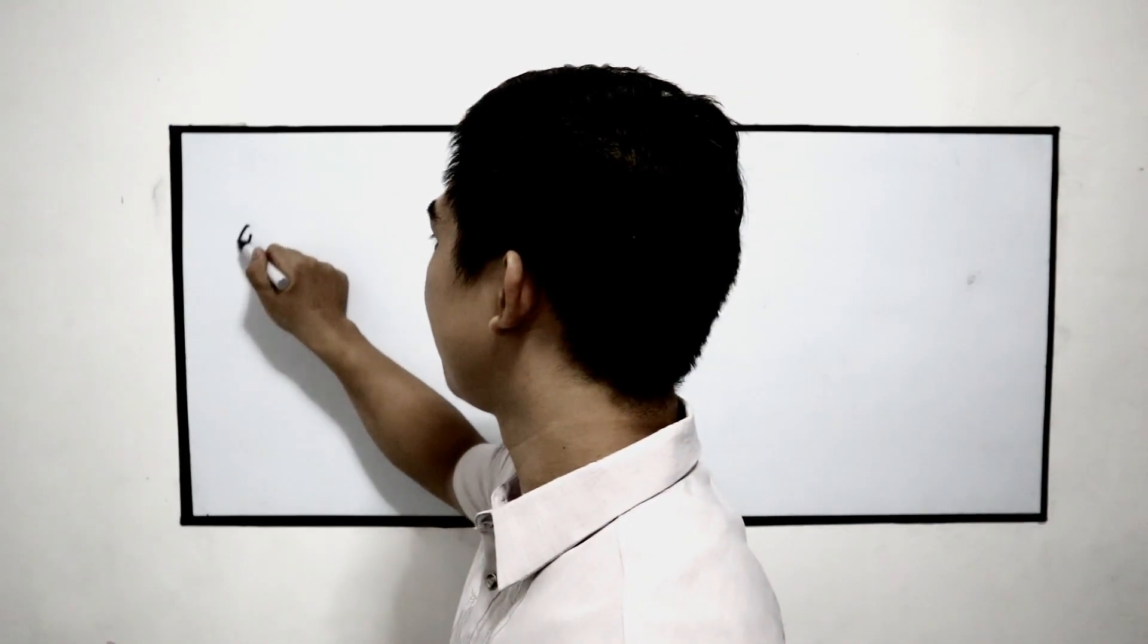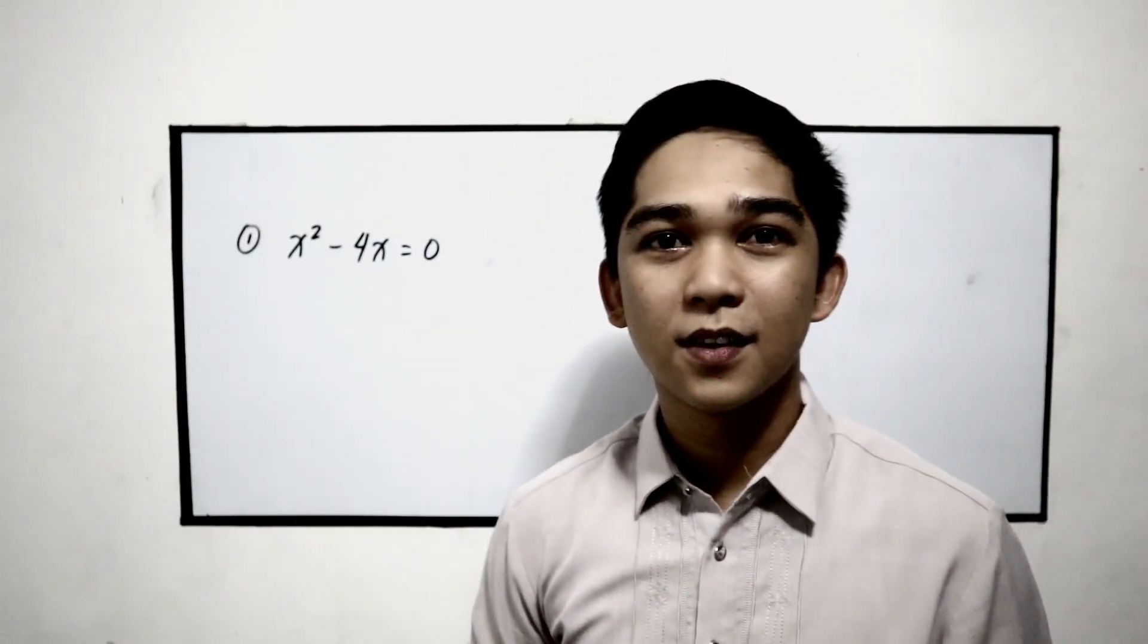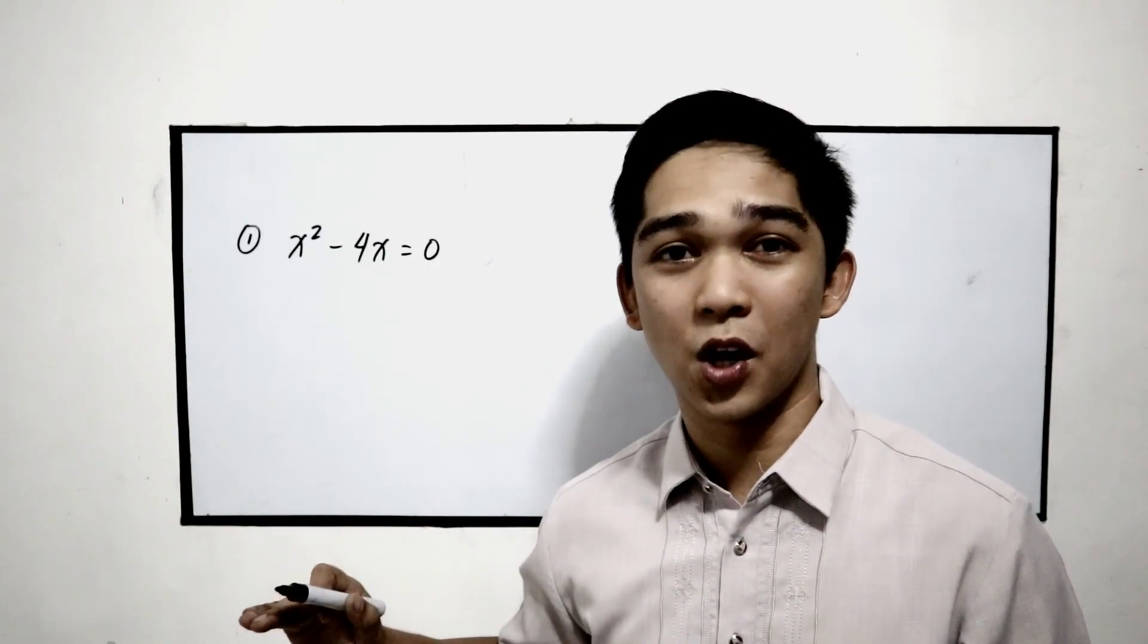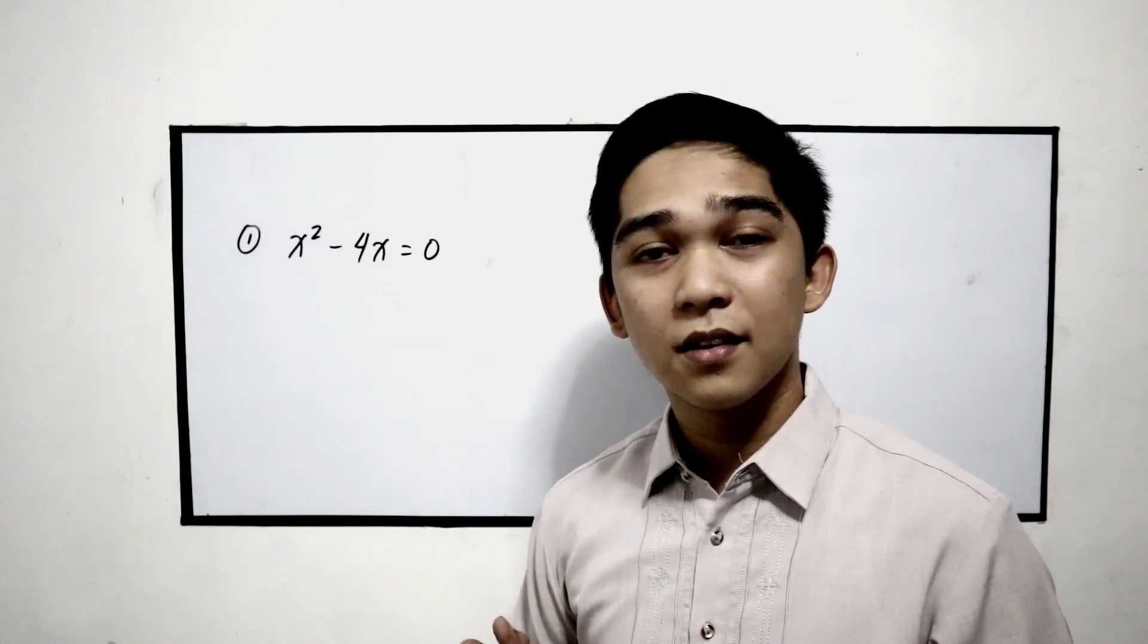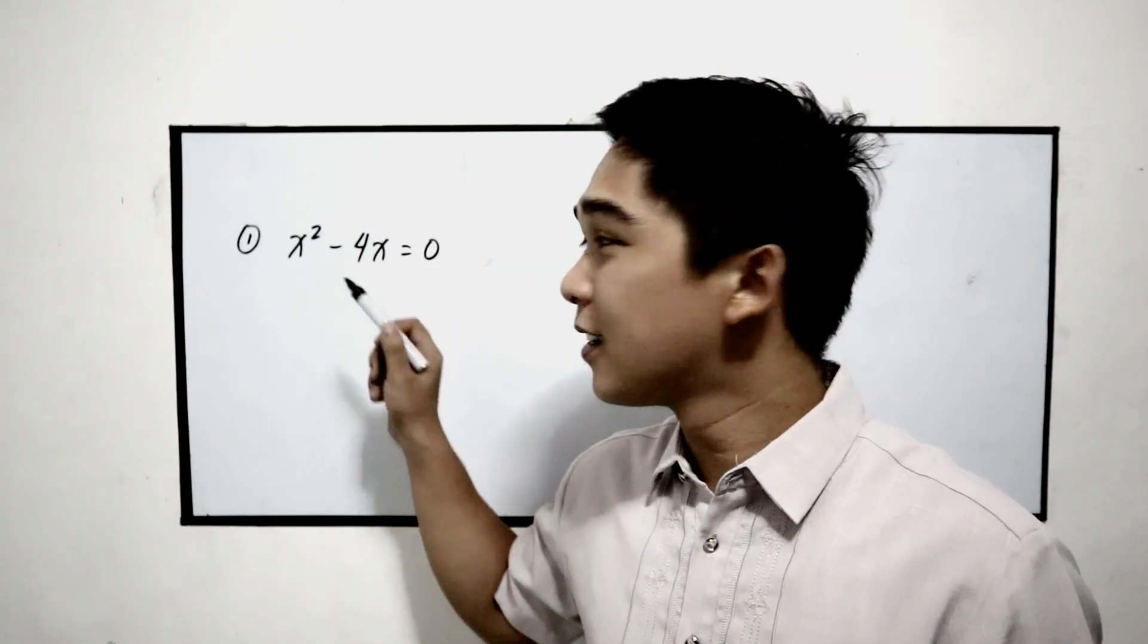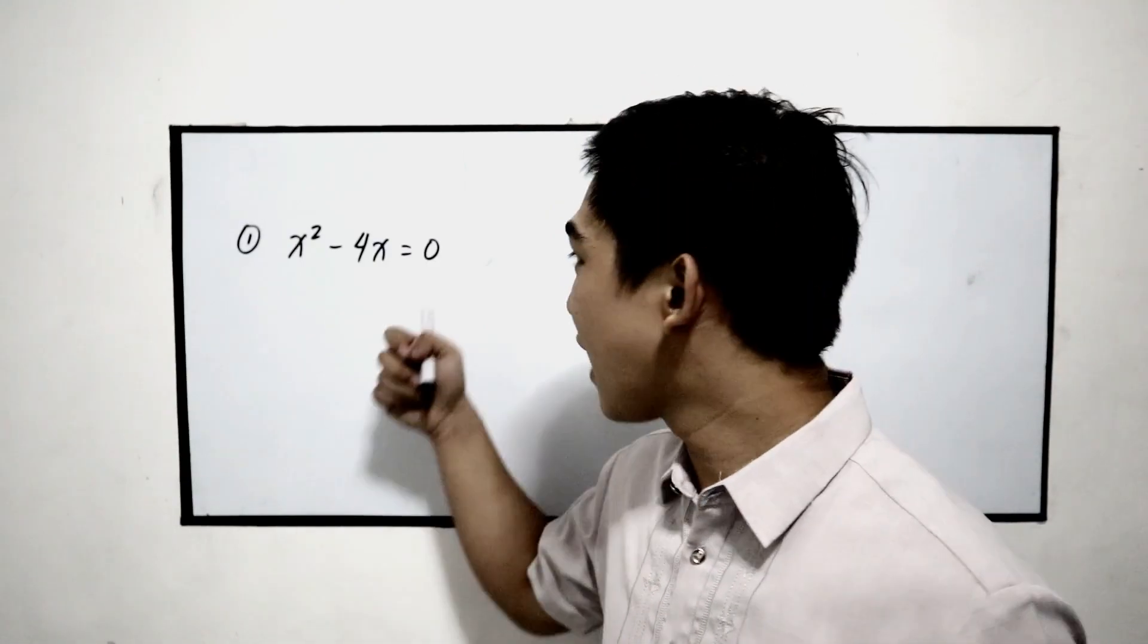Let us discuss that one by one. Now let us start with the greatest common factor. Greatest common factor, that means we need to get or determine first the common factor. Let us try number 1. x squared minus 4x equals 0. First, determine the common factor of the coefficient, then after that, the variable. For the coefficient, the common factor is 1. Let us proceed to our variable now. Our common factor for the variable is x because x is our lowest exponent.